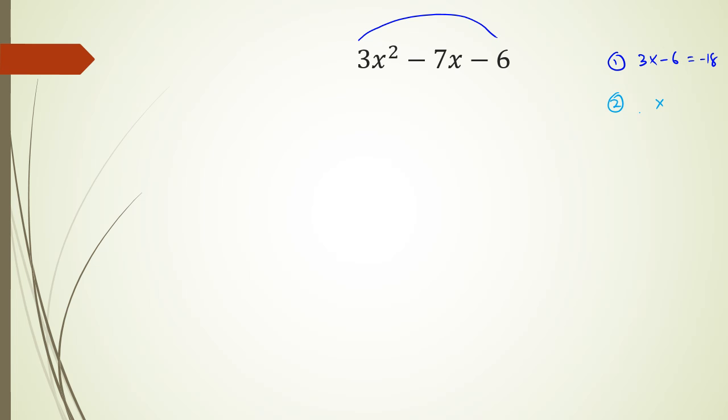So our second step is we're looking for two numbers that multiply to negative 18 and add to negative 7, which is from here. And we kind of know that this is going to be negative 9 and positive 2. So now what I could do is split that negative 7x as negative 9x and 2x. So we're going to get 3x squared minus 9x plus 2x and minus 6.